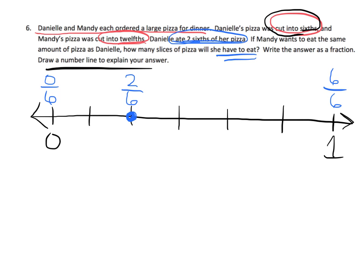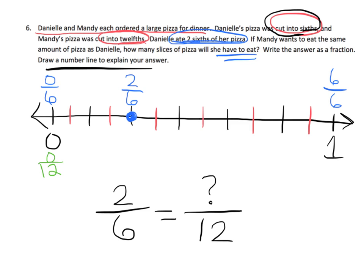All right. Now Mandy, her pizza was cut into twelfths. So that means we're going to have to cut each of these intervals in half. Because really what we're asking is two-sixths is equal to how many twelfths? And so once we've got our intervals in twelfths, because I cut all these original sixths in half to make twelve. And so now what we have here is we have zero-twelfths here. We have twelve-twelfths way over here. And so that makes two-sixths, let's see, one, two, three, four. That makes it four-twelfths.